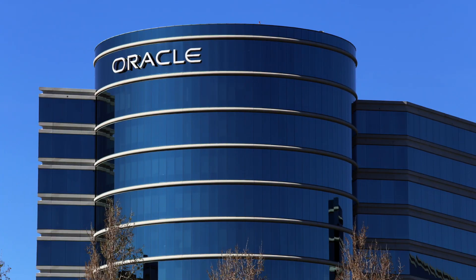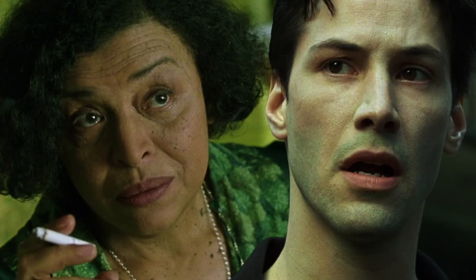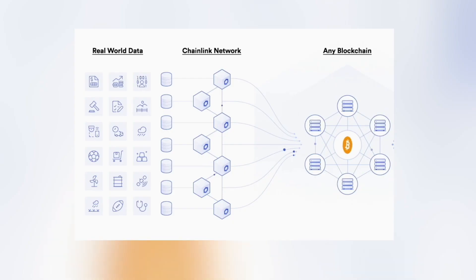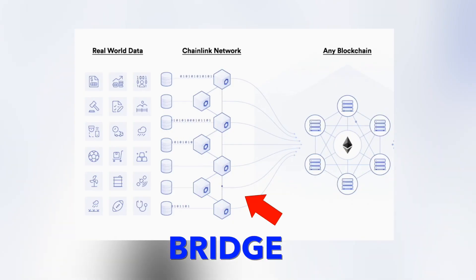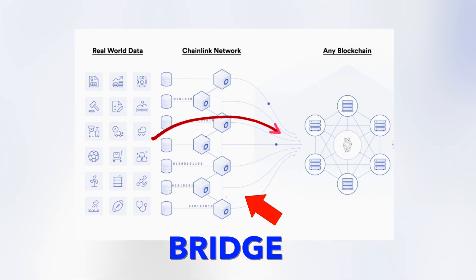Chainlink's main differentiator is what's called the use of an oracle — and no, not the company, although we'll talk about that a little bit later, and no, not the woman from the Matrix either. An oracle serves as a bridge from existing platforms and networks into the outside world for real world data to be passed through into those networks.